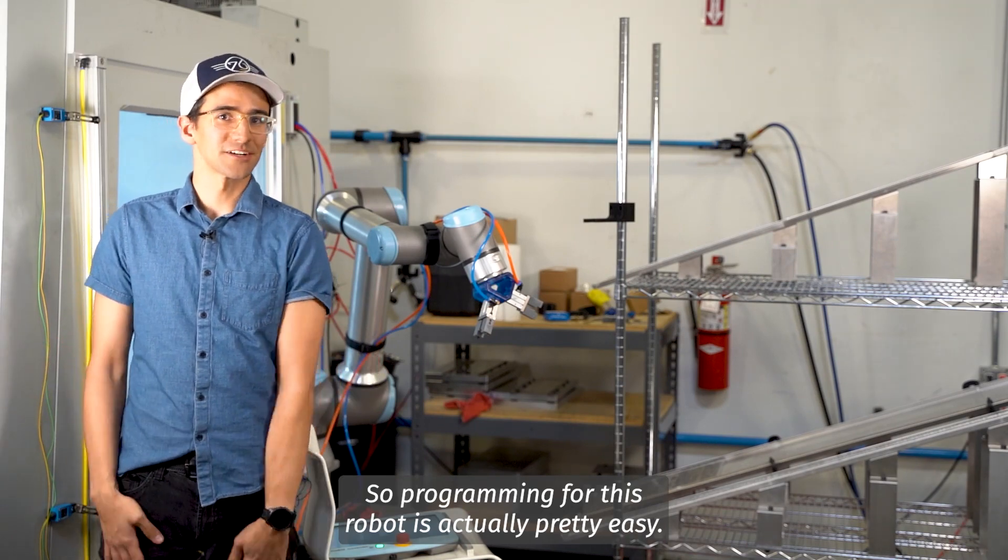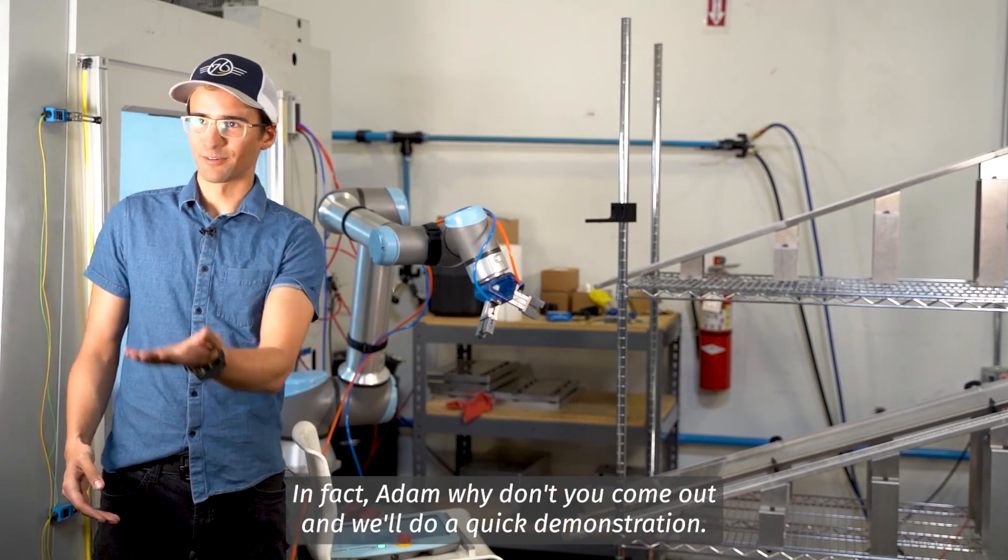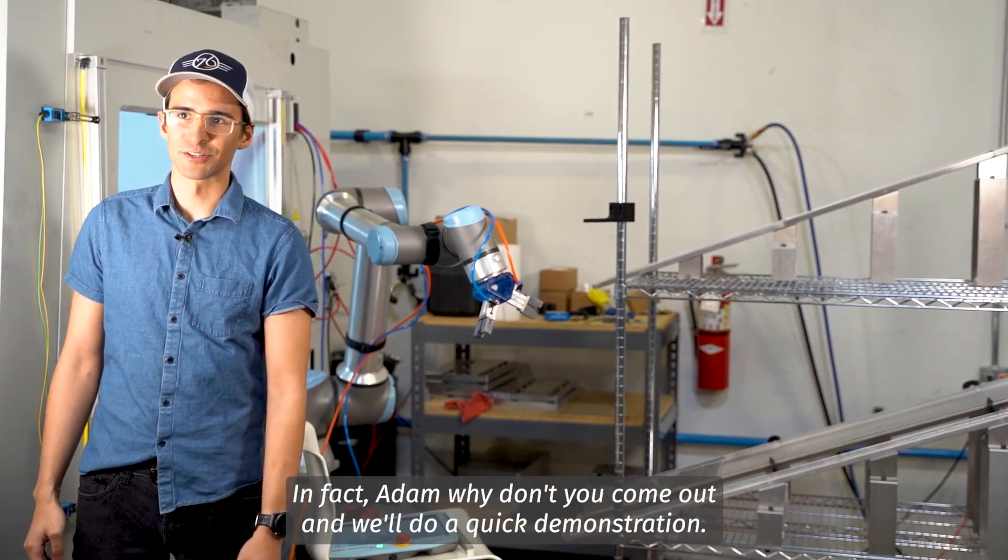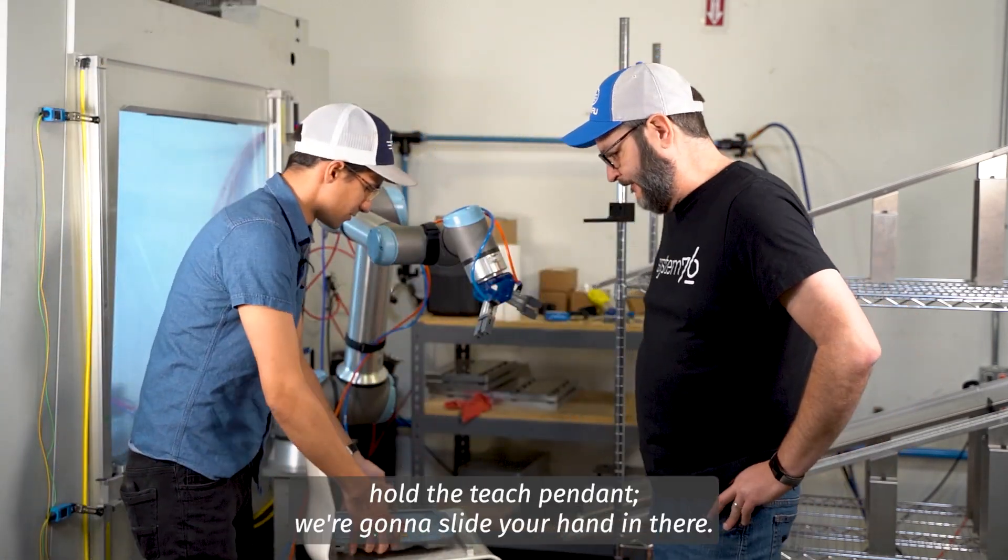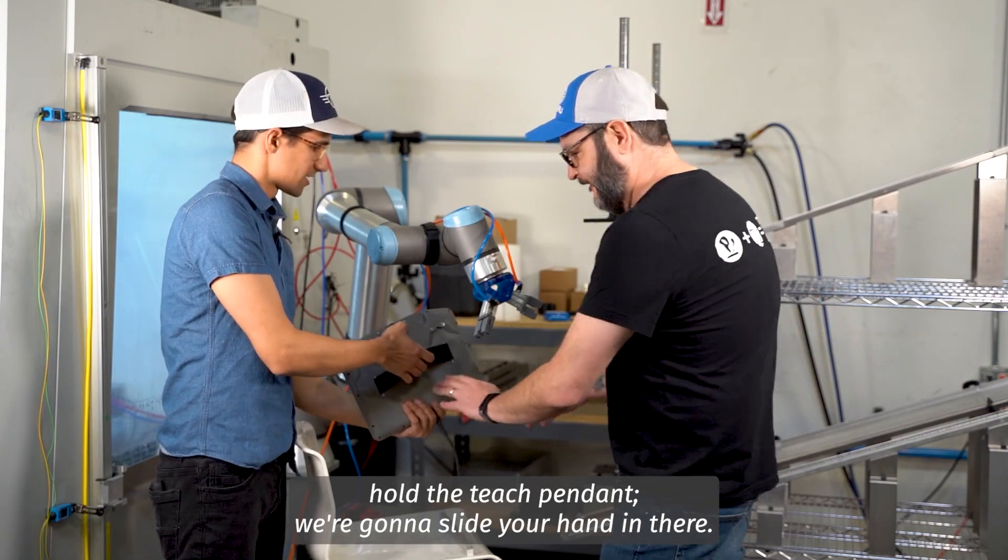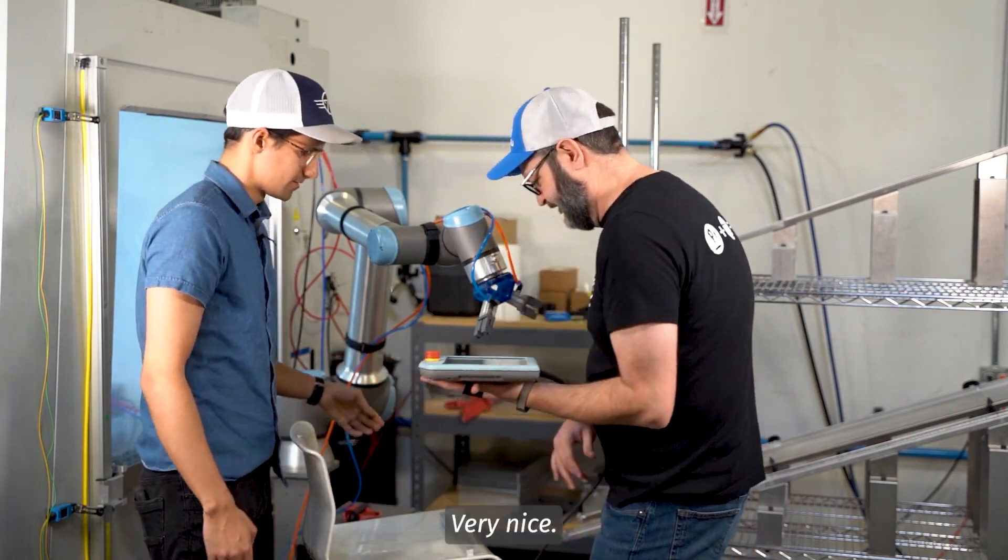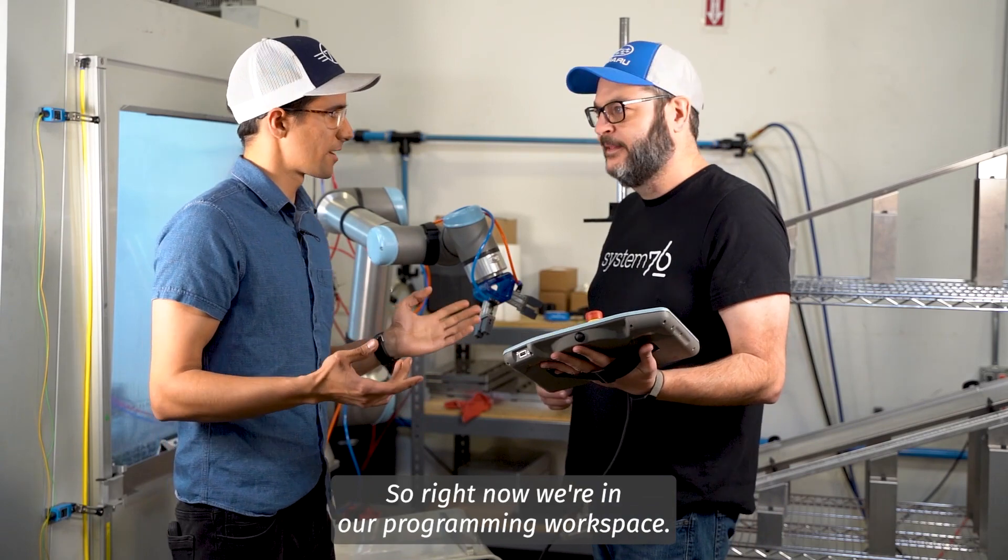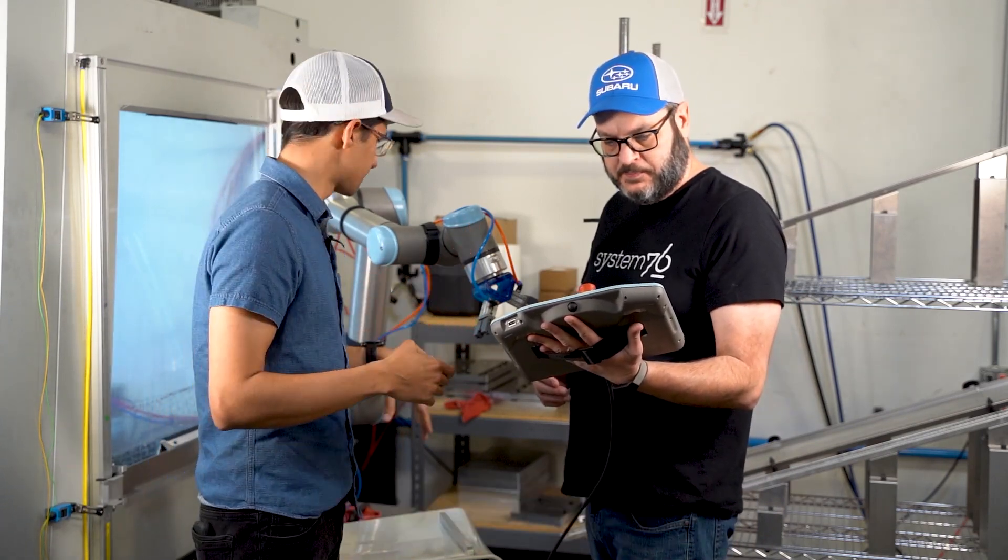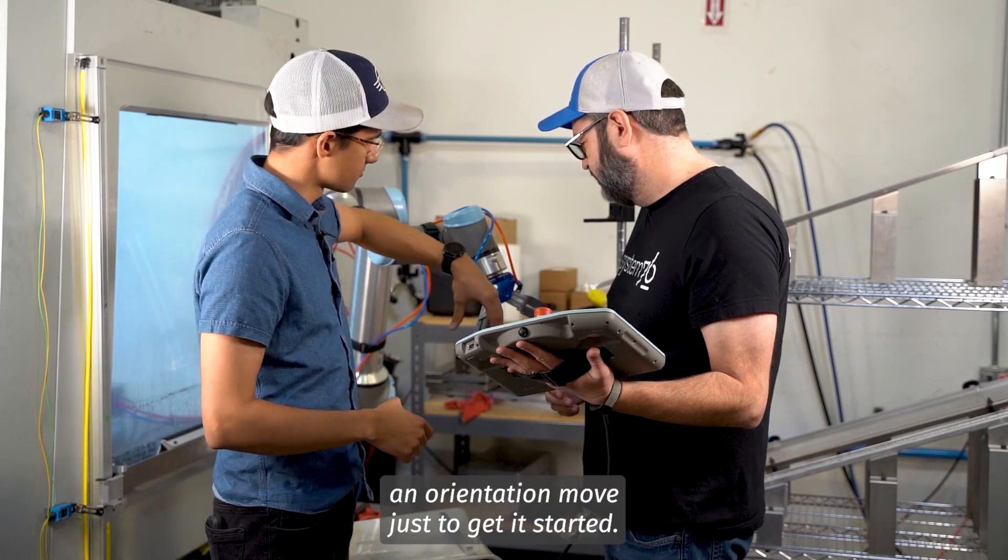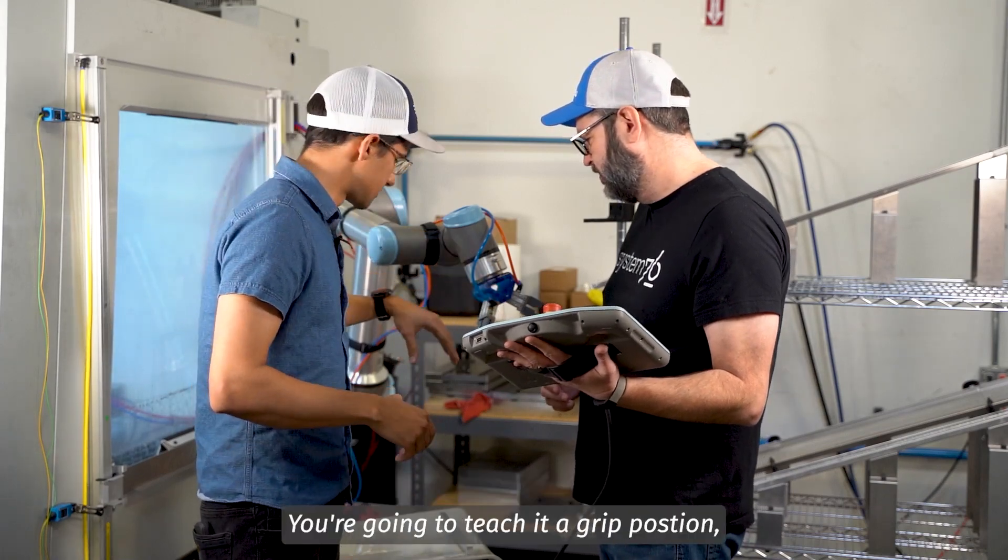So programming for this robot is actually pretty easy. In fact, Adam, why don't you come out and we'll do a quick demonstration? Okay, so go ahead and hold the teach pendant. You're going to slide your hand in there. Very nice. So right now we're in our programming workspace. What we're going to do is we're going to teach it a move, an orientation move just to get it started. You're going to teach it a grip position, which is just another move.